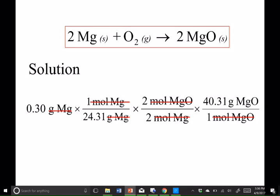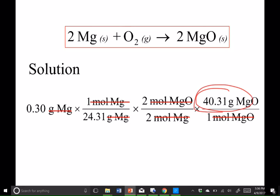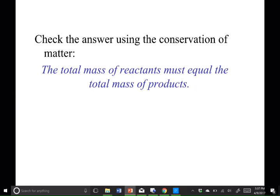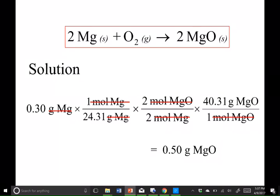You're going to have to show the molar mass calculation — show how you got that earlier in the problem. So how are we going to round this? 2 sig figs, because of the 2 sig figs in the mass of magnesium we started with.